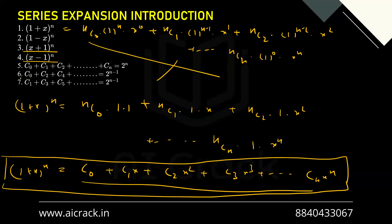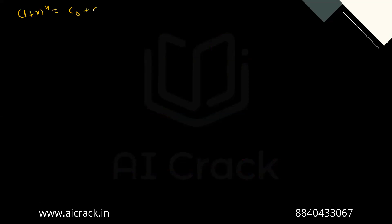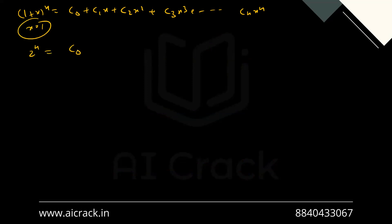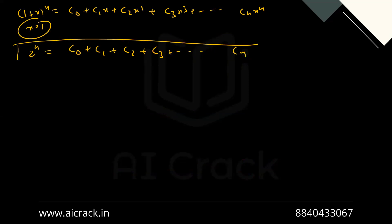The fifth formula is C0 + C1 + C2 + ... + Cn = 2^n. To derive this, we use (1+x)^n = C0 + C1·x + C2·x² + C3·x³ till Cn·x^n and put x = 1. We get 2^n = C0 + C1 + C2 + C3 till Cn. You have to remember this one.